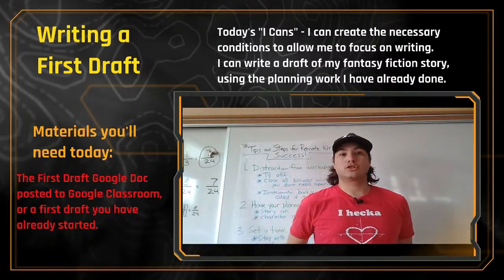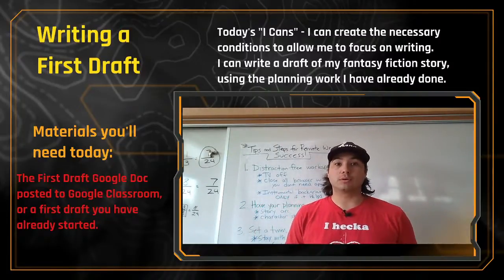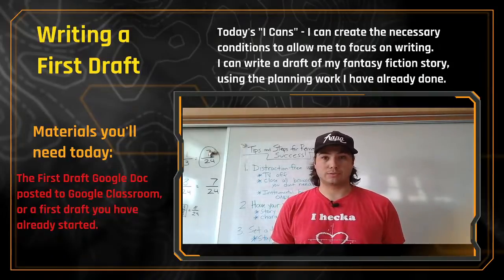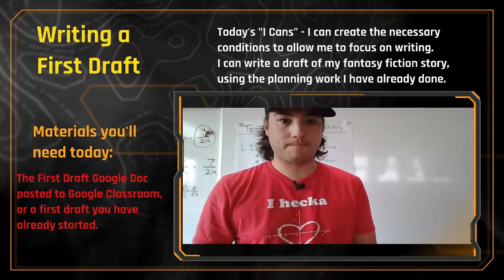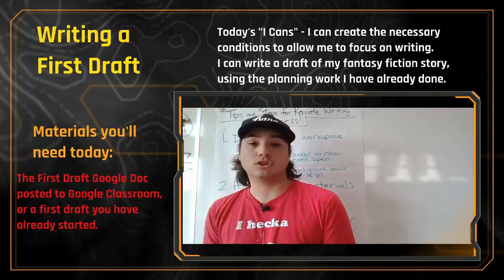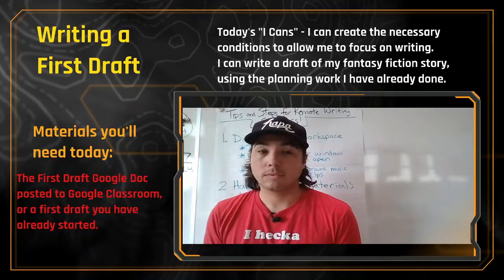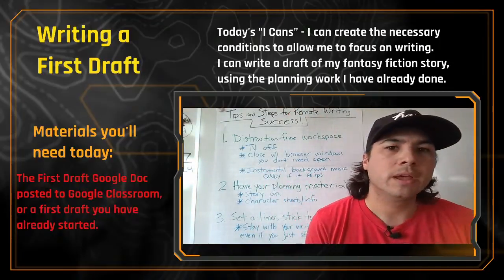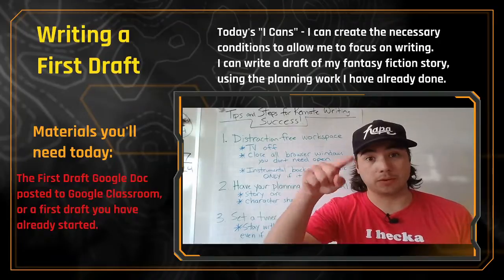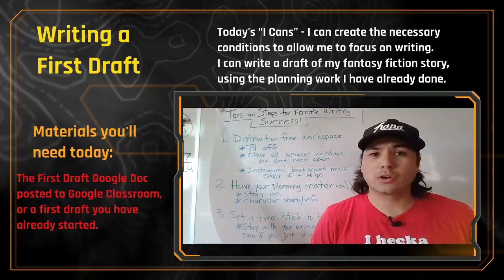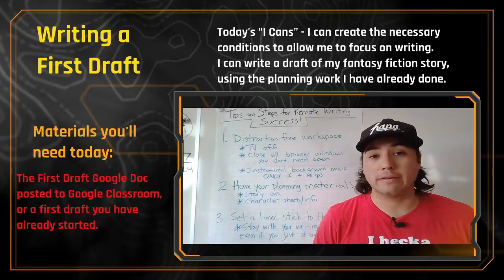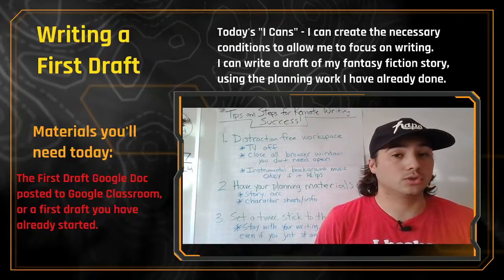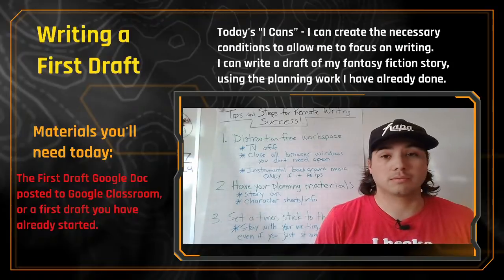Here's what you're going to need today. There should be a first draft Google Doc assignment on Google Classroom posted in about 60 seconds. If you have not yet started a first draft of your fantasy fiction story, there's a document right in there for you to start that. If you have already started the first draft, click 'View Assignment,' then click 'Add or Create,' select Google Drive, and pick your Google Doc to attach it to the assignment. If you need help with that, we can talk about it in small group.